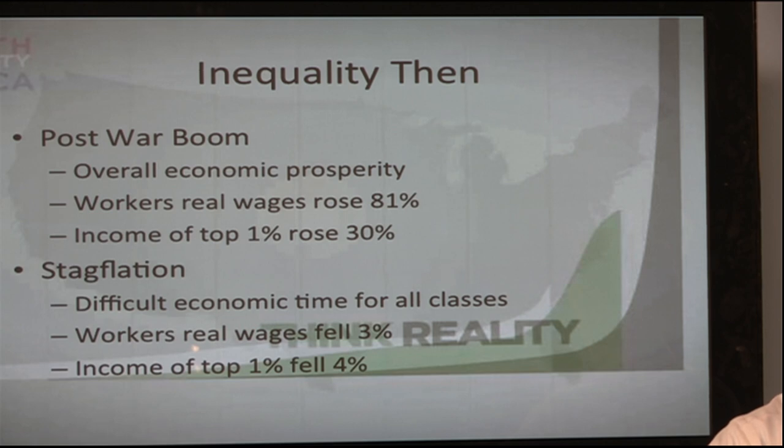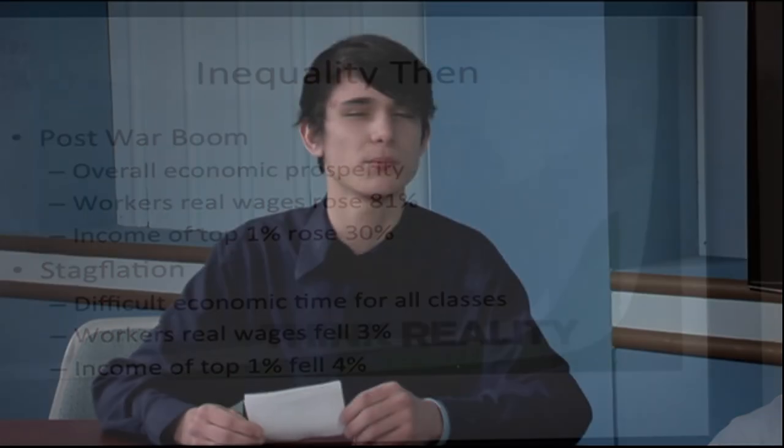Following that was a period of stagflation, where workers' real wages and income of the top 1% both fell 3% and 4% respectively. This brings us to what people refer to as the new Gilded Age. Much like the original Gilded Age, there are high levels of economic inequality concentrated at the top 1%. Workers' real wages fell 1% while income of the top 1% rose 135%. The richest 400 people have more wealth than the bottom 60% of Americans. There are less progressive taxes compared to the Great Compression — the tax on the top wealthiest is now 40% compared to 90%.